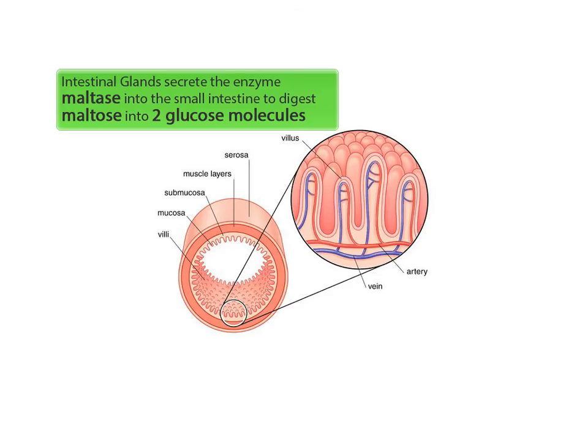The walls of the small intestine then secrete an enzyme called maltase, which digests maltose into two glucose molecules. The glucose molecules are now small enough to be absorbed directly into the bloodstream through the capillary network of the microvilli that line the walls of the small intestine.